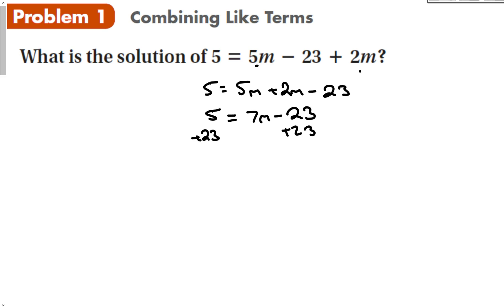Remember, our goal is to get the variable by itself. After we combine the like terms, we're going to do our inverse operations in reverse order of operations. I add 23 to both sides and we get 28 is equal to 7m. Divide out the 7 because it's 7 times m, and we get that 4 is equal to m.